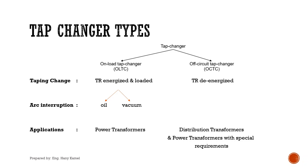On the other side, the off-circuit tap changer cannot do the same, so the transformer must be de-energized. In the OLTC, if the arc interruption medium is oil, this type is called oil tap changer; but if the interruption medium is vacuum, it is called vacuum tap changer. The OLTC is mostly used in power transformers, and with special customer requirements, an additional OCTC will be used also, but OCTC is mostly used in distribution transformers.